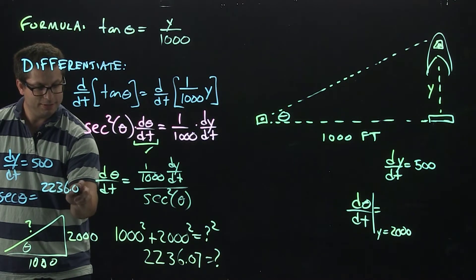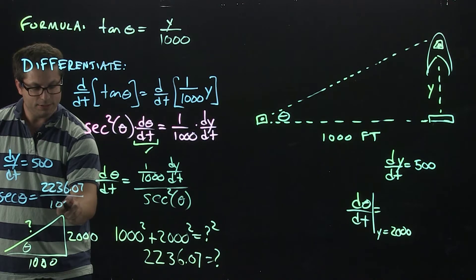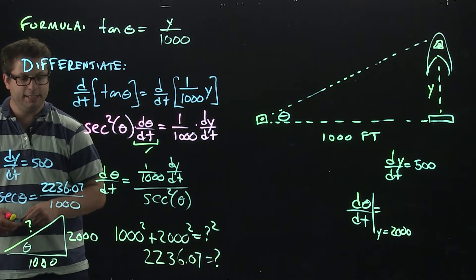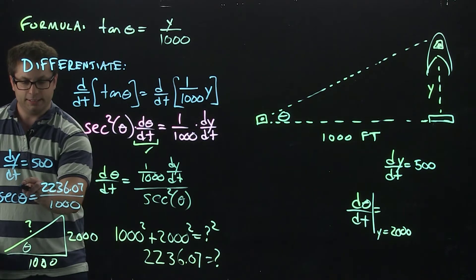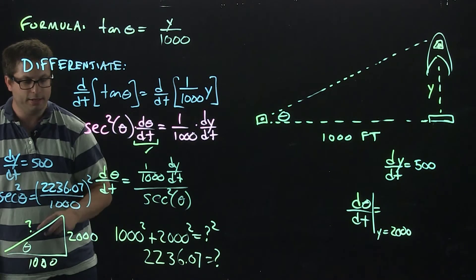And we're going to say that's, what did I say? 2,236.07 divided by 1,000. Now that's just secant theta. So then in order to get secant squared, we're just going to have to square that number.